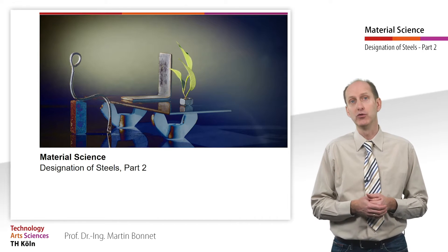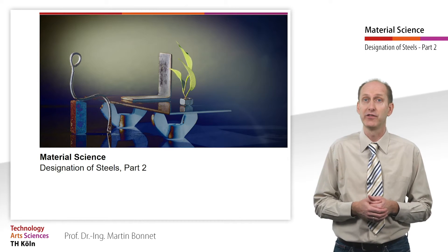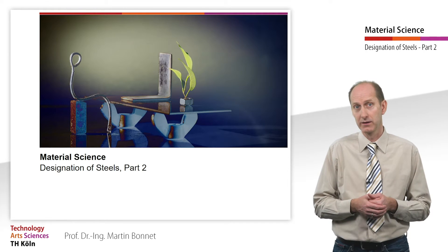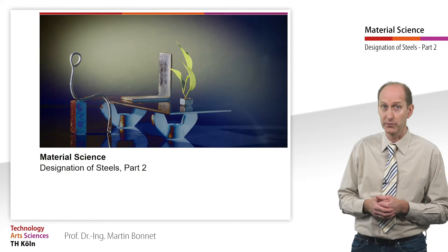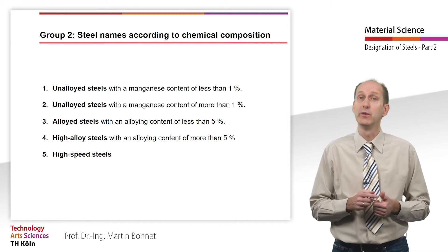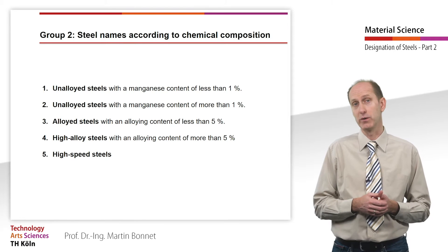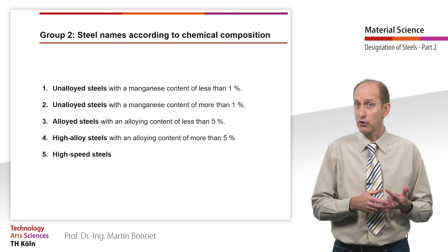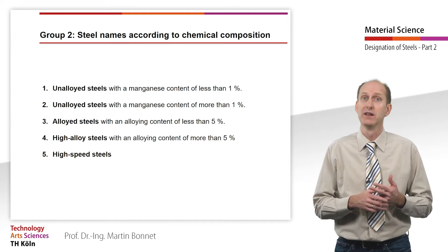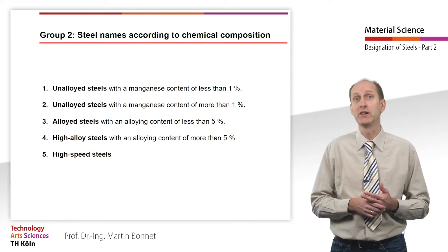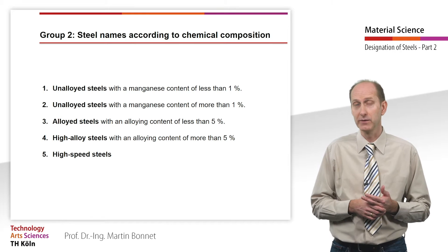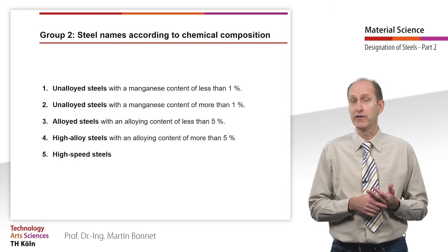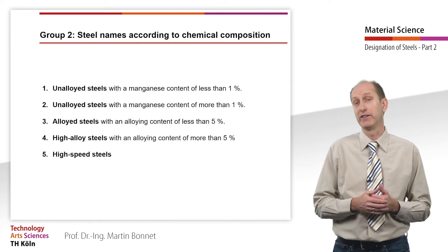The steel names of Group 2 are classified in five subcategories that differ in their content of alloying elements. First, unalloyed steels with a manganese content of less than 1%. Second, unalloyed steels with a manganese content of more than 1%. Third, alloyed steels with an alloying content of less than 5%. Fourth, high alloyed steels with an alloying content of more than 5%. And fifth, high speed steels.